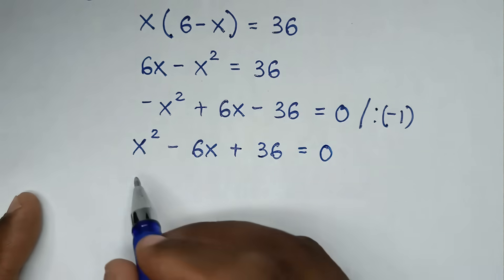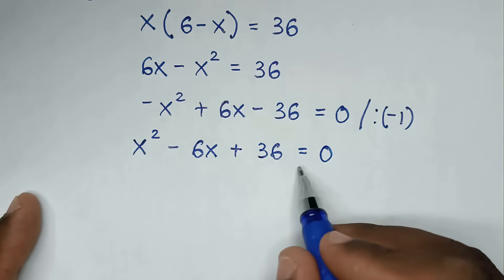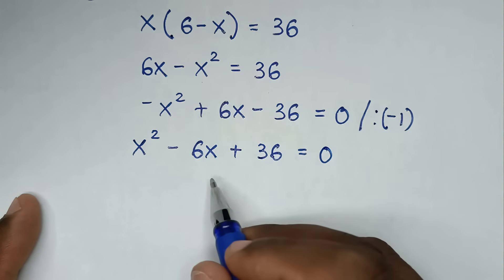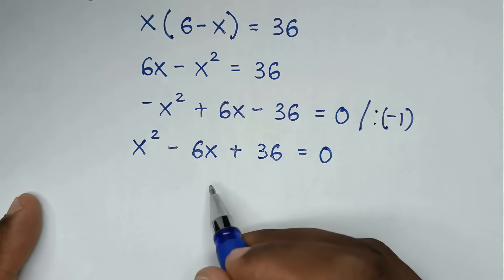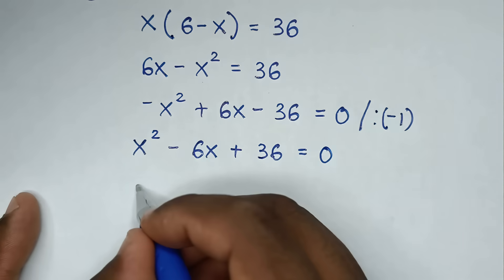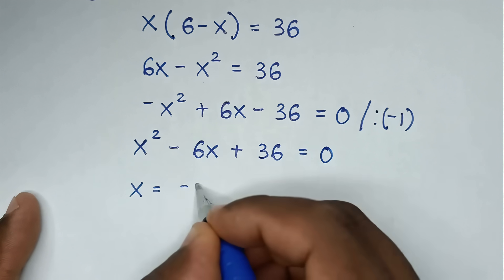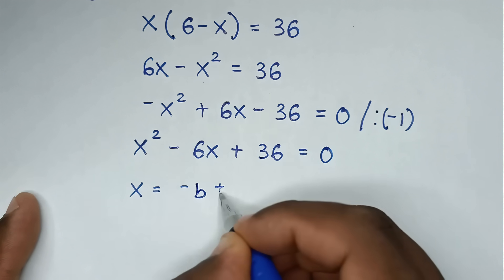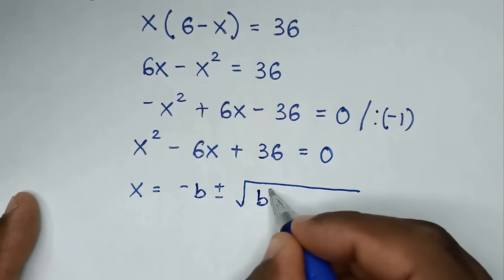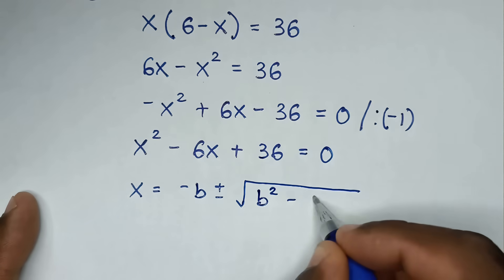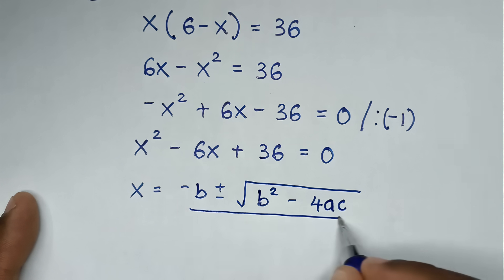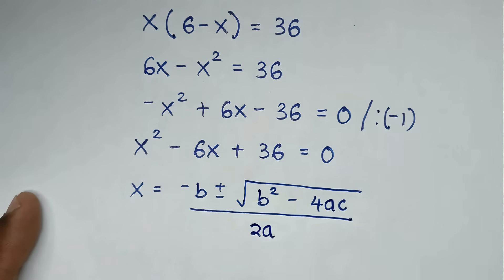From this quadratic equation, to find the values of x we will solve it by using the quadratic formula, which is x equals negative b plus or minus square root of b squared minus 4ac, over 2a.